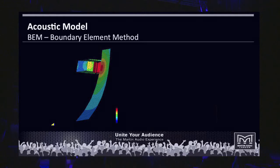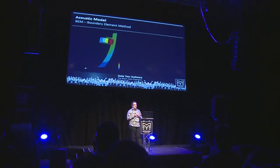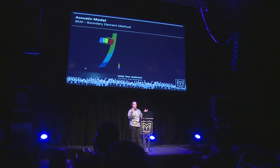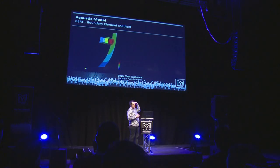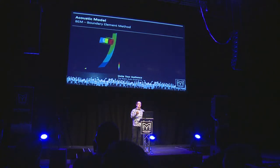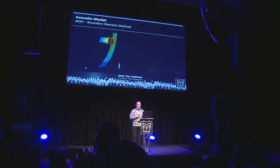So the way we quantified that is using an acoustic technique called the boundary element method. That relies on putting a mesh of analysis points around the surface of the loudspeaker and then solving many thousands of calculations offline back in the lab in order to figure out the dispersion of sound from that loudspeaker at any point in space. And you see what we've done here is we've taken an MLA midrange horn, sliced it in half, and put this mesh around it to analyze the output from that system.